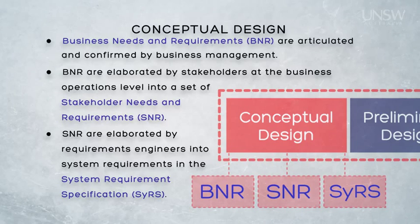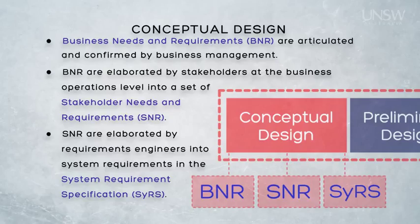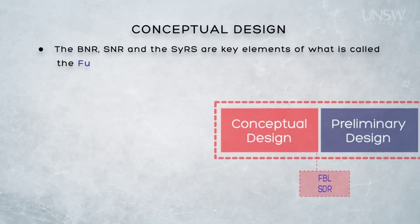There may be more than one system requirements specification for the entire capabilities system, but it's more likely that there's one SYRS for each of the constituent elements of the capability — that is, one for each of the major materiel systems, one for the personnel, one for support, one for training facilities, and so on. Each of these constituent capability elements may be developed independently and may well be developed through separate contracts.